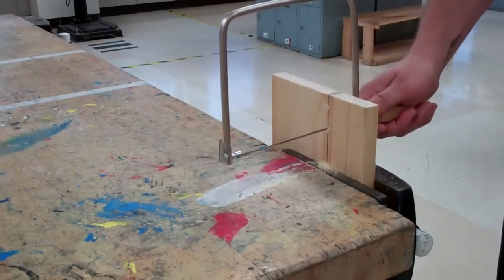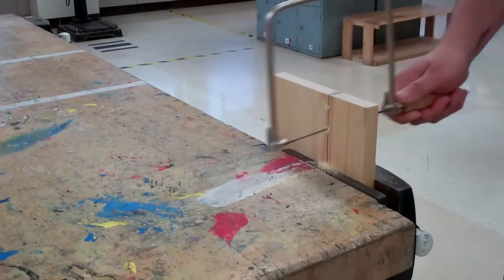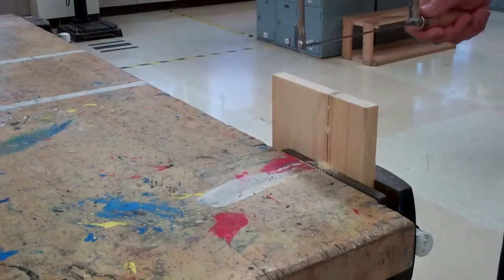To remove the blade from a cut, you simply keep the saw moving back and forth while raising it up and out of the cut that you just made.